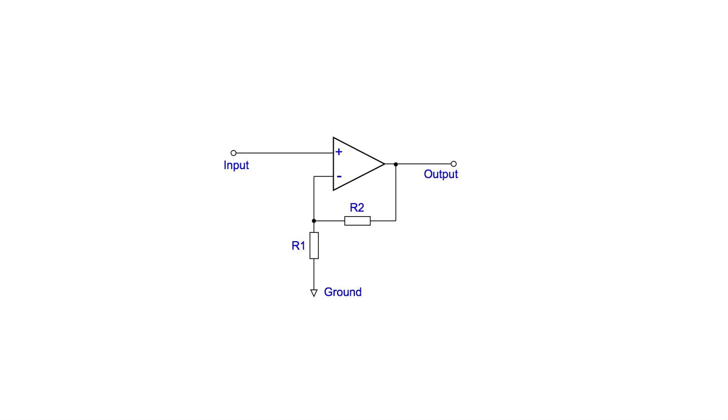The input impedance of the non-inverting amplifier is very high unlike its cousin the inverting amplifier where the impedance is that of the input resistor. As a result this amplifier configuration can be used when we don't want to load the previous stage.